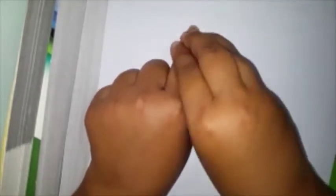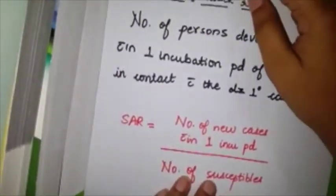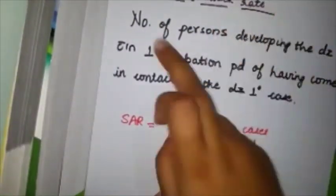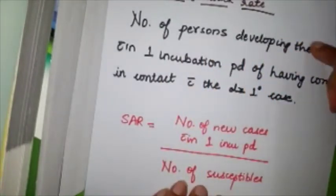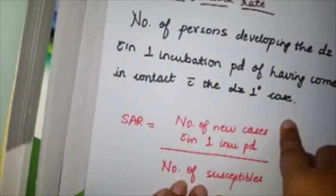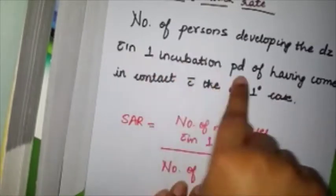So, secondary attack rate is like in an area one particular person has got a disease, how many people develop disease from this guy. So obviously it's a communicable disease. Within one incubation period is your secondary attack rate.